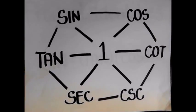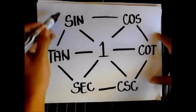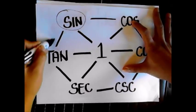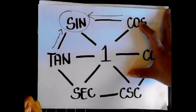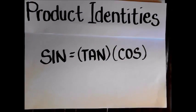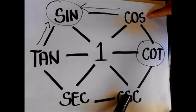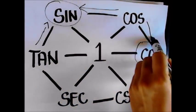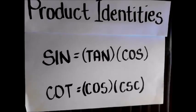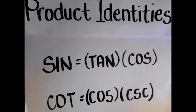The hexagon also shows the product identities — a function between any two functions equals their product. For example, sine is between tangent and cosine, so multiplying tangent and cosine together gives the product identity: sine equals tangent times cosine. Similarly, cotangent is between cosine and cosecant, so cotangent equals cosine times cosecant.